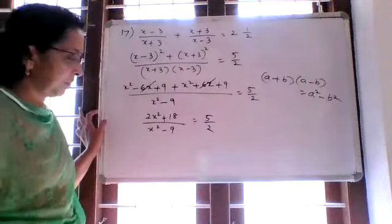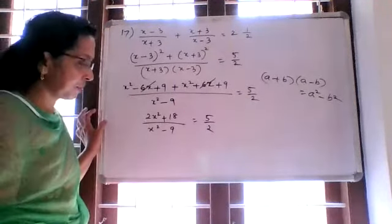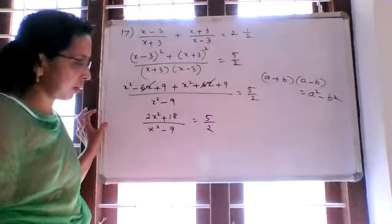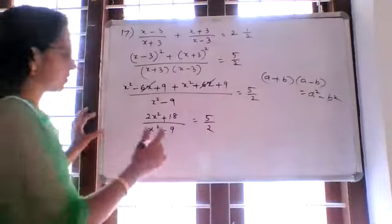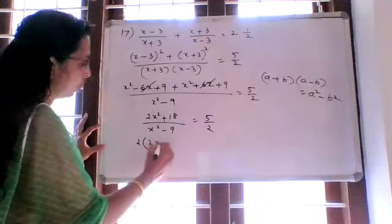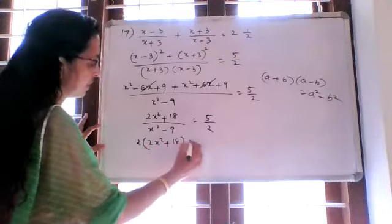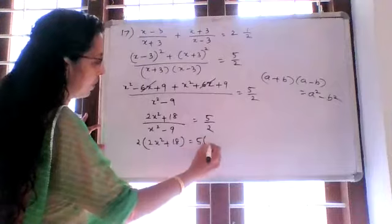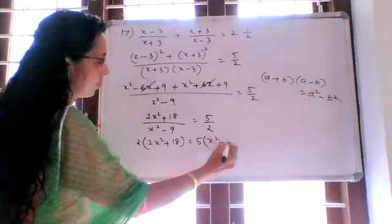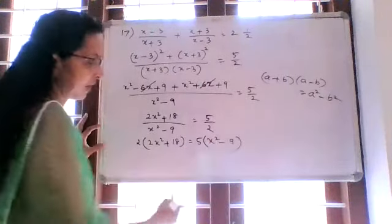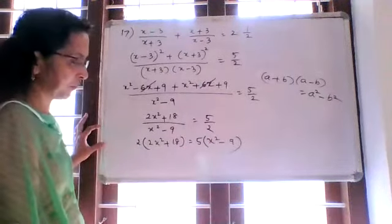Cross multiplying: 2 into 2x squared plus 18 is equal to 5 into x squared minus 9. Expanding the brackets gives 4x squared plus 36 equals 5x squared minus 45.